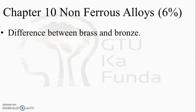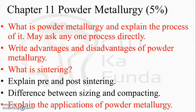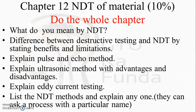Chapter 10 is Non-Ferrous Alloys, carrying six percent of weightage — the difference between brass and bronze is an important question here. Chapter 11 is Powder Metallurgy, which is also important. Key questions include: what is powder metallurgy and explain its process; GTU may ask any process directly. Sintering is a particularly important topic within this chapter.